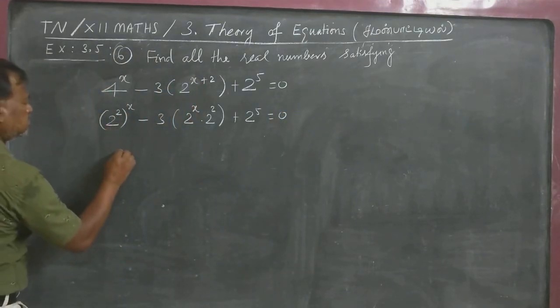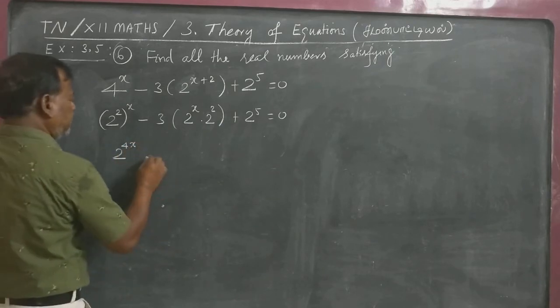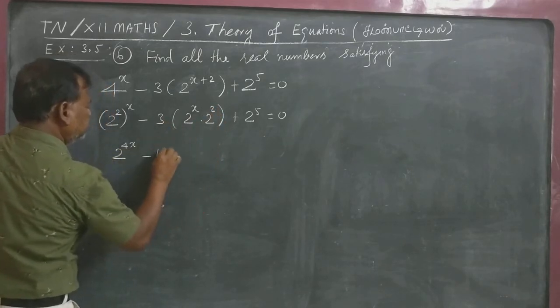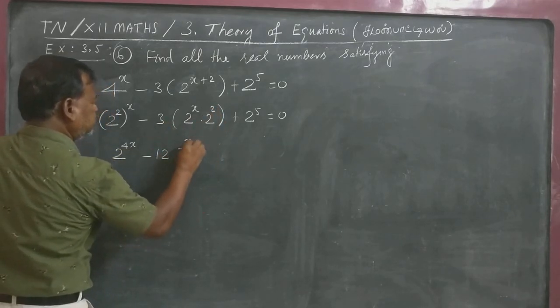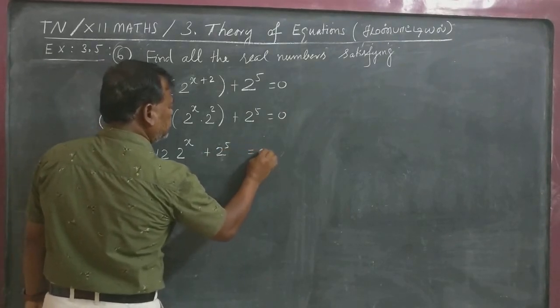This one is 2 power 4X minus 2 square 4, 4 into 3, 12 into 2 power X, plus 2 power 5 is equal to 0.